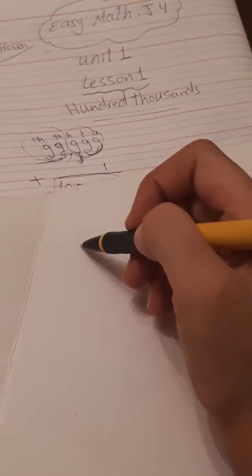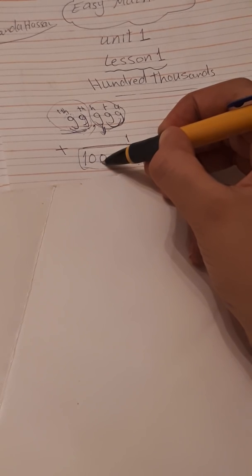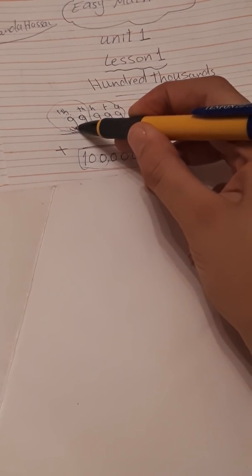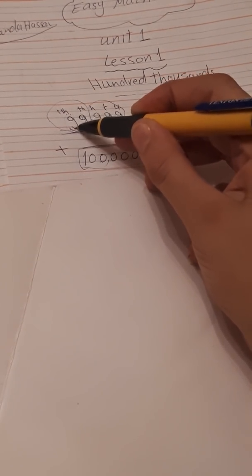Nine plus one equals ten - zero and carry one. One plus nine equals ten - zero and carry one. One plus nine equals ten - zero and carry one. One plus nine equals ten - zero and carry one for the thousands, for the ten thousands. Nine plus one equals ten, so here we need another digit.